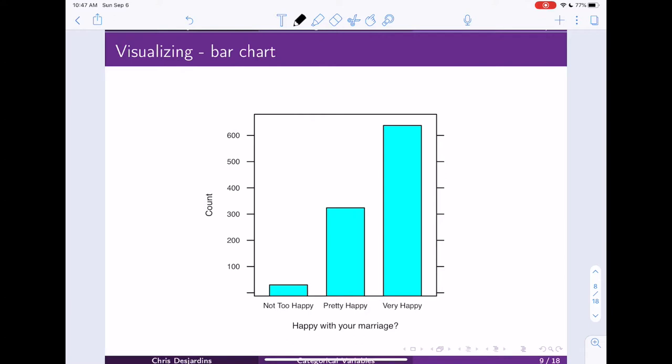In the bar chart, the categories in general are going to be on the x-axis. So our category, not too happy, pretty happy, very happy. And then on the y-axis is going to be the count, the number in each of these categories.